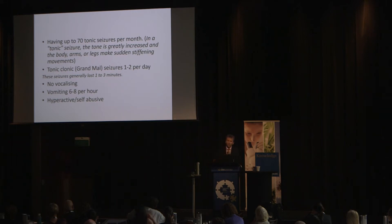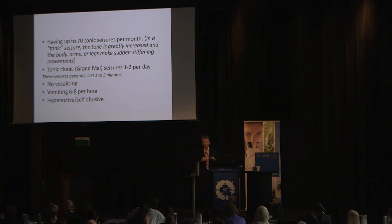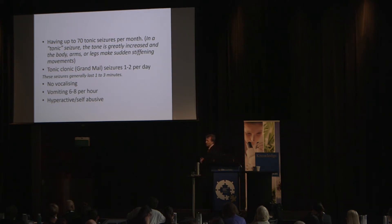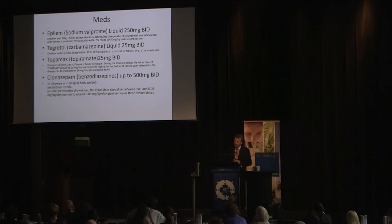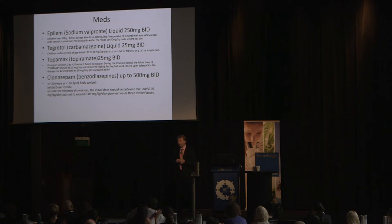He was no longer vocalizing words — he was screaming continuously — and still vomiting six to eight times per hour irrespective of whether he had consumed any food. Bile acids are very abrasive to oropharyngeal tissues and cause blistering and pain. He was hyperactive and self-abusive. George would headbang for hours, which is why they put him in a helmet. The medication he was on was Epilim, Tegretol, Topamax, and clonazepam — at doses equivalent to a full-grown adult, with little or no effect on his seizure patterns.